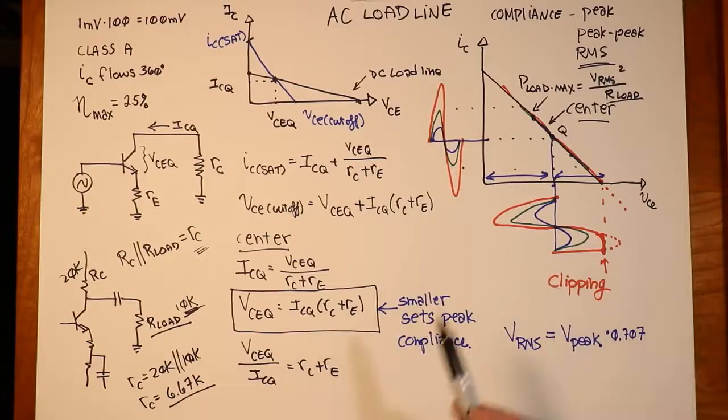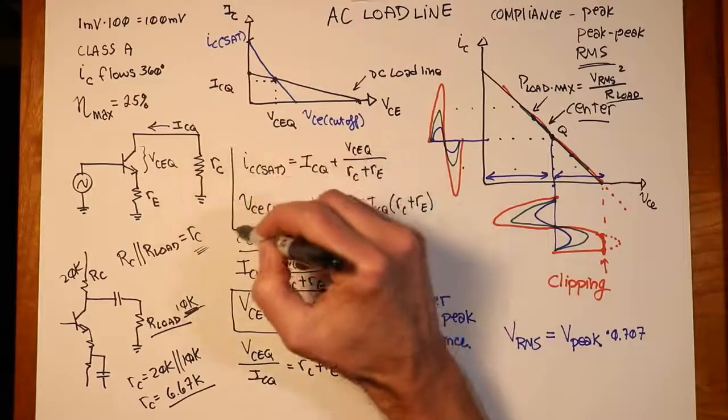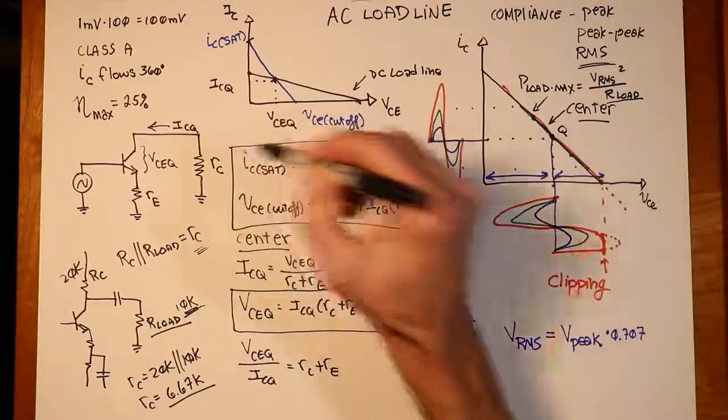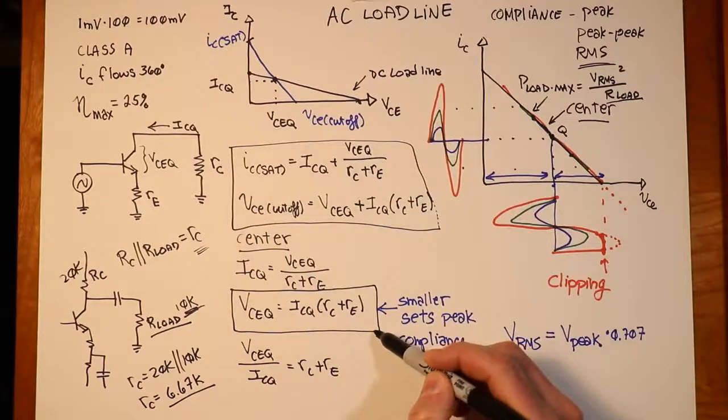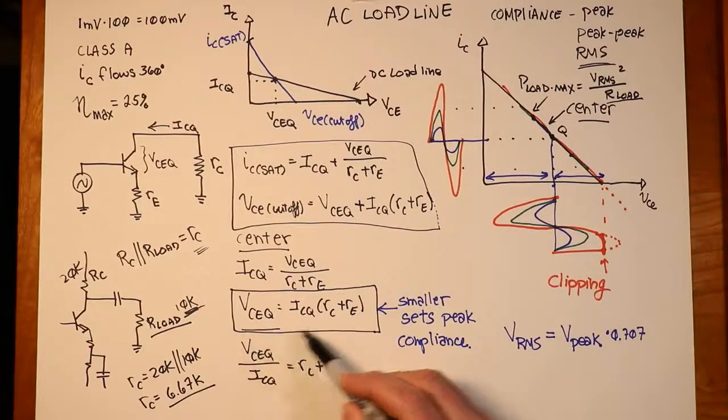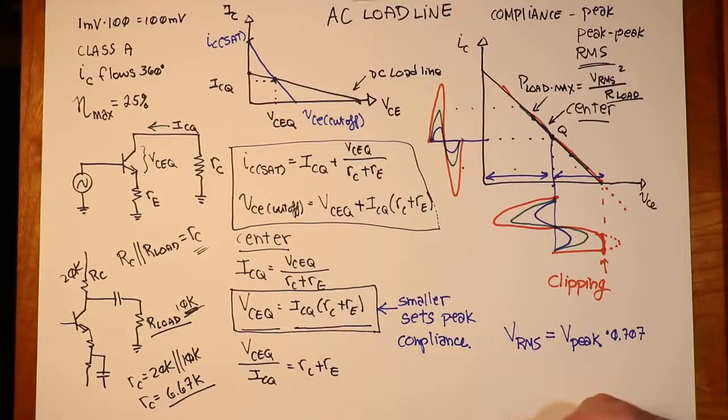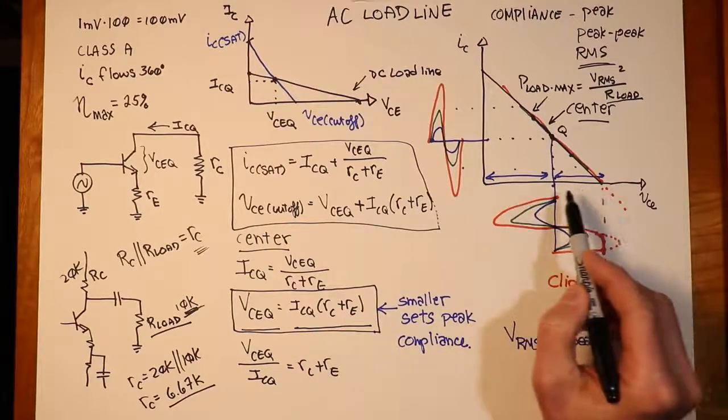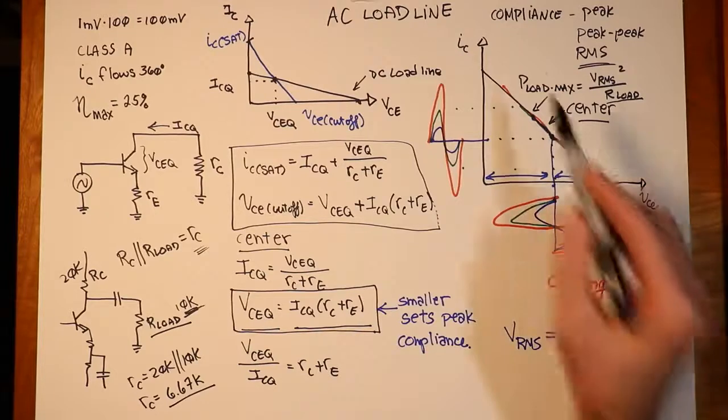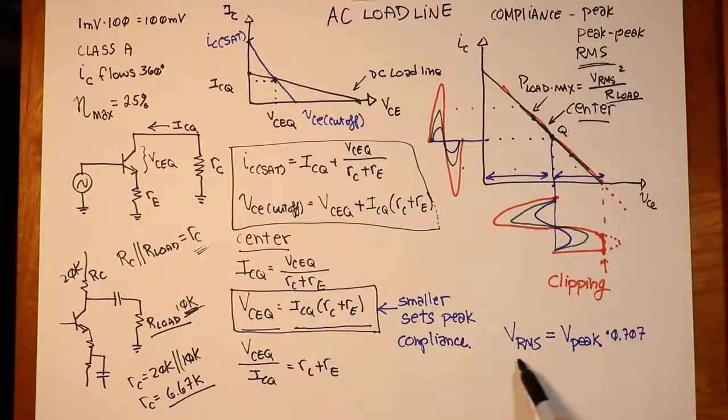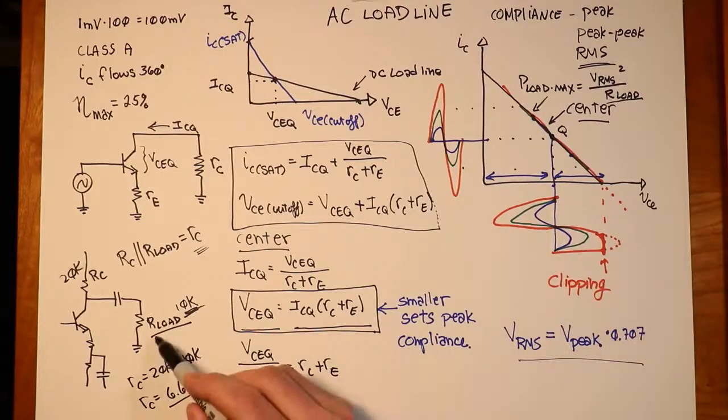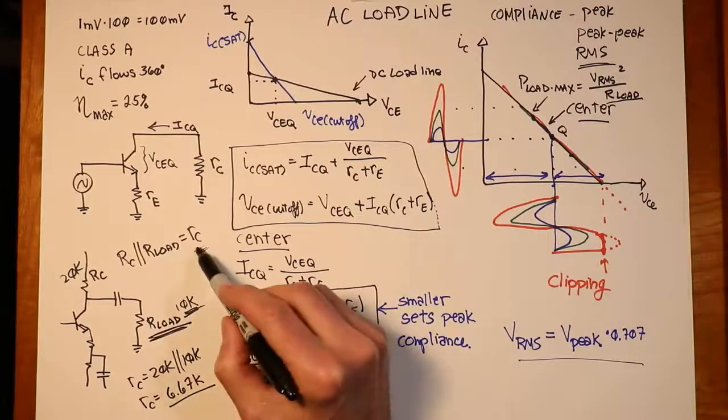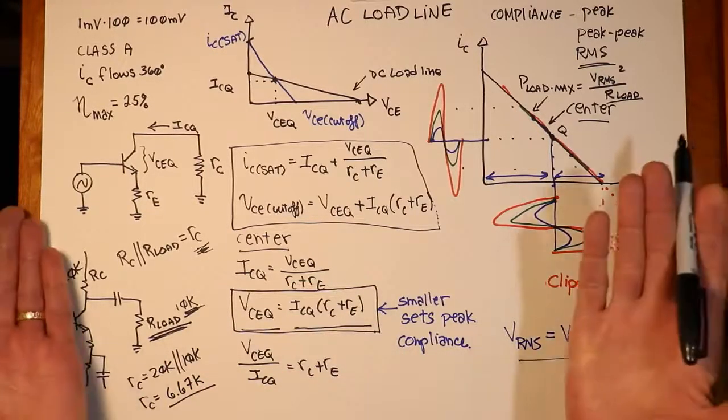So, to recap, what we do here is we calculate our AC load line, and we have two equations for that right here. Most importantly is the second one, this one right here. And we want to basically look at these two pieces of it, VCEQ and ICQ times the collector emitter resistance. Whichever one is smaller, that will tell us essentially which side clips first, if you will. That sets the peak compliance. We can turn that into an RMS value and then use that RMS value to compute true load power, remembering to use the actual load resistance, not the AC equivalent. There you have it.